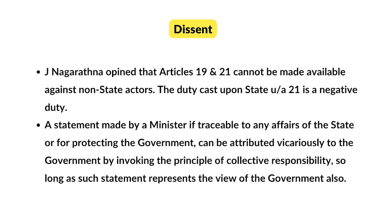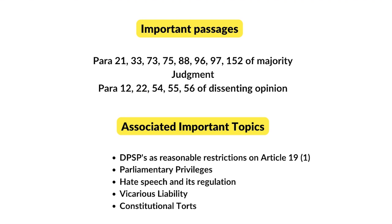This was about the case. For CLAT-PG aspirants, the paragraphs shown on screen from the majority judgment and dissenting opinion are the ones which could be asked in your exam. The important topics associated with this case are: first, directive principles of state policy as reasonable restrictions on Article 19(1) — you can refer to the Minerva Mills case; second, Parliamentary Privileges — since we are discussing MPs' and MLAs' freedom of speech under Article 19; third, Hate Speech and its Regulation; and lastly, Vicarious Liability and Constitutional Torts. If you are preparing for CLAT-PG, you can check out our courses from the link in the description box. Please like, share, and subscribe to our YouTube channel.